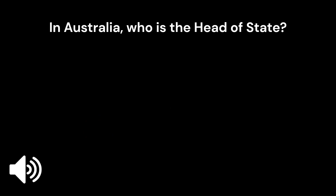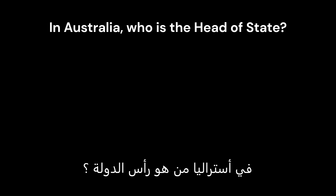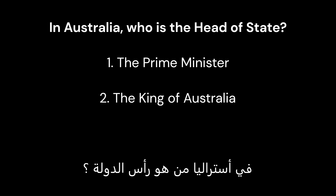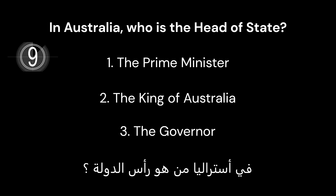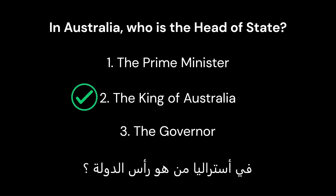In Australia, who is the head of state? 1. The Prime Minister. 2. The King of Australia. 3. The Governor. The correct answer is 2. The King of Australia.